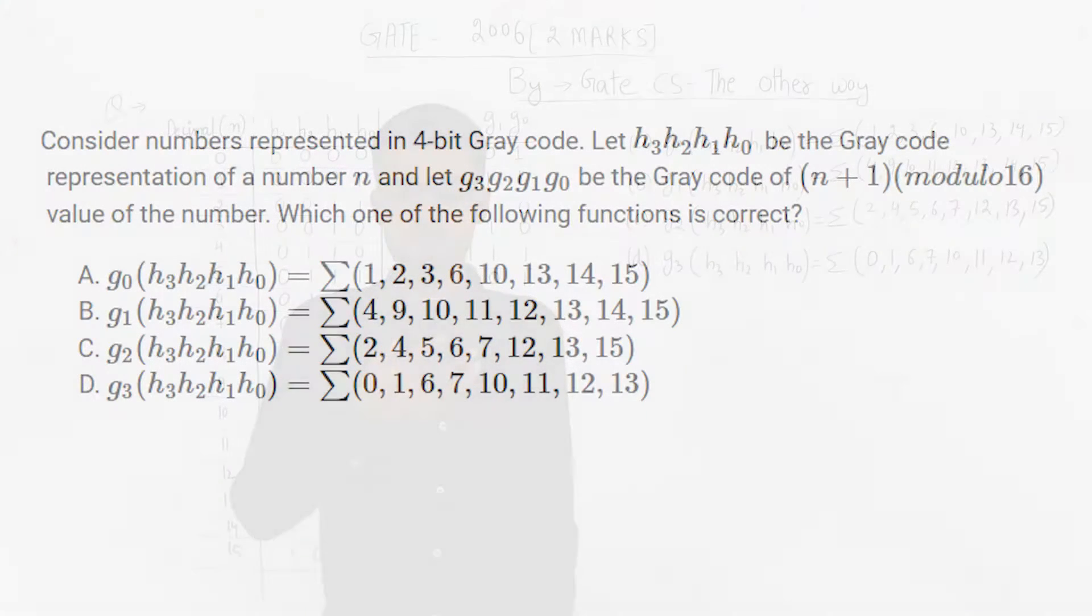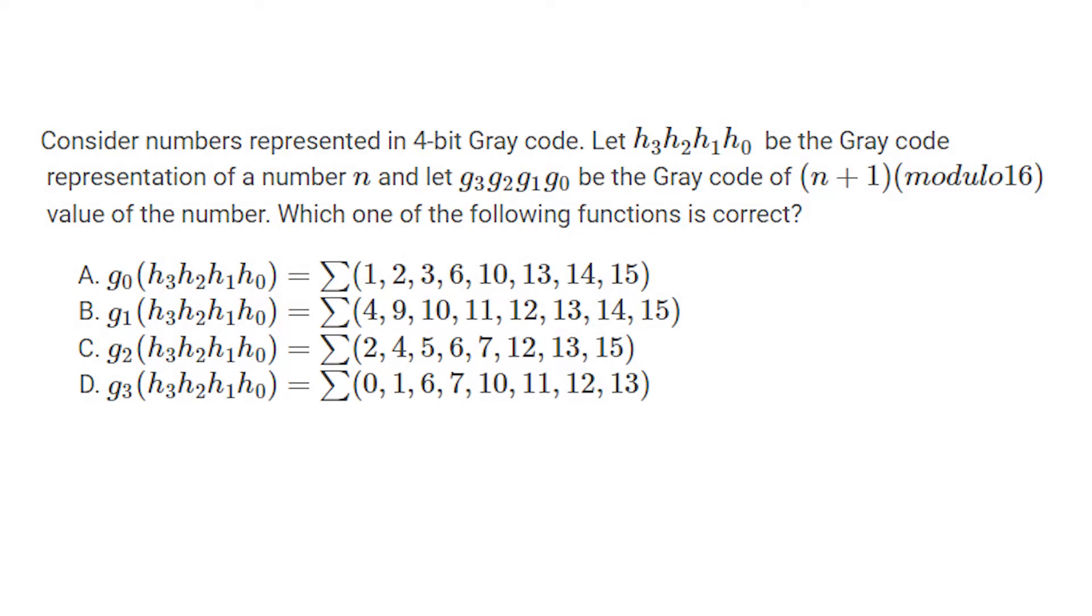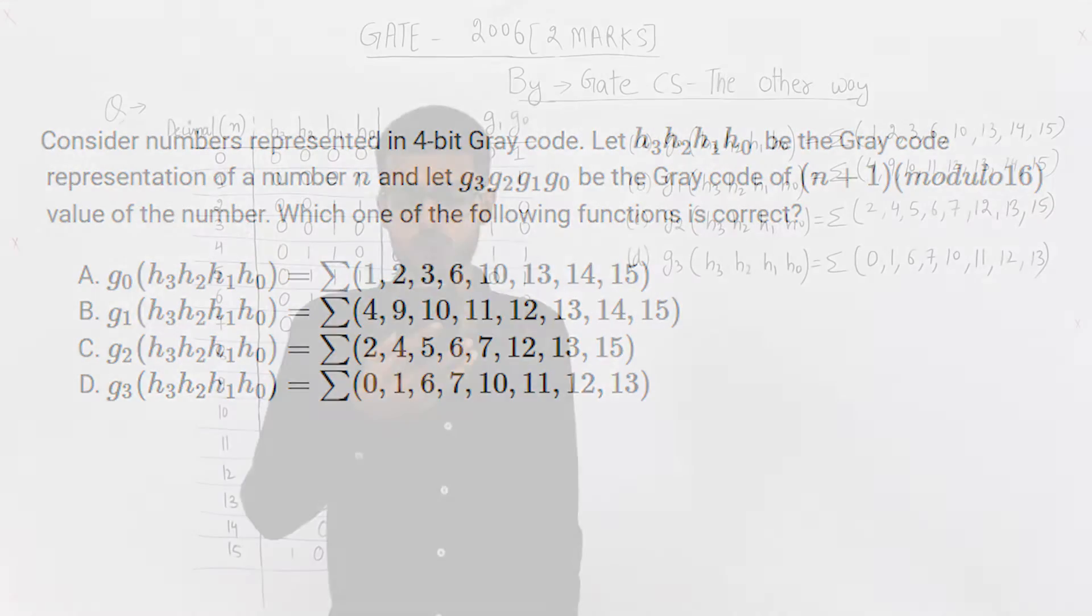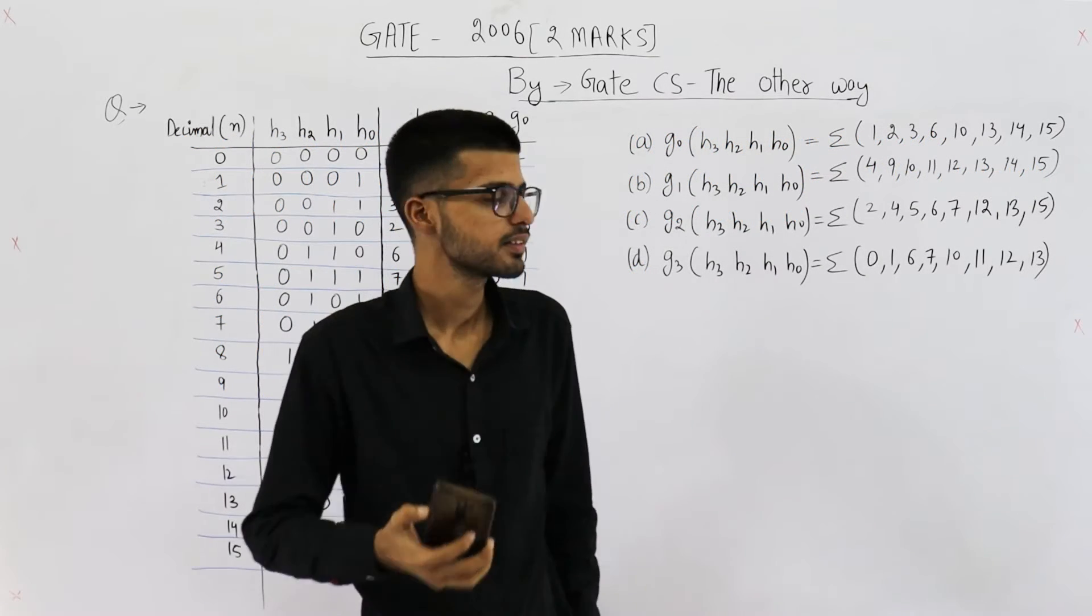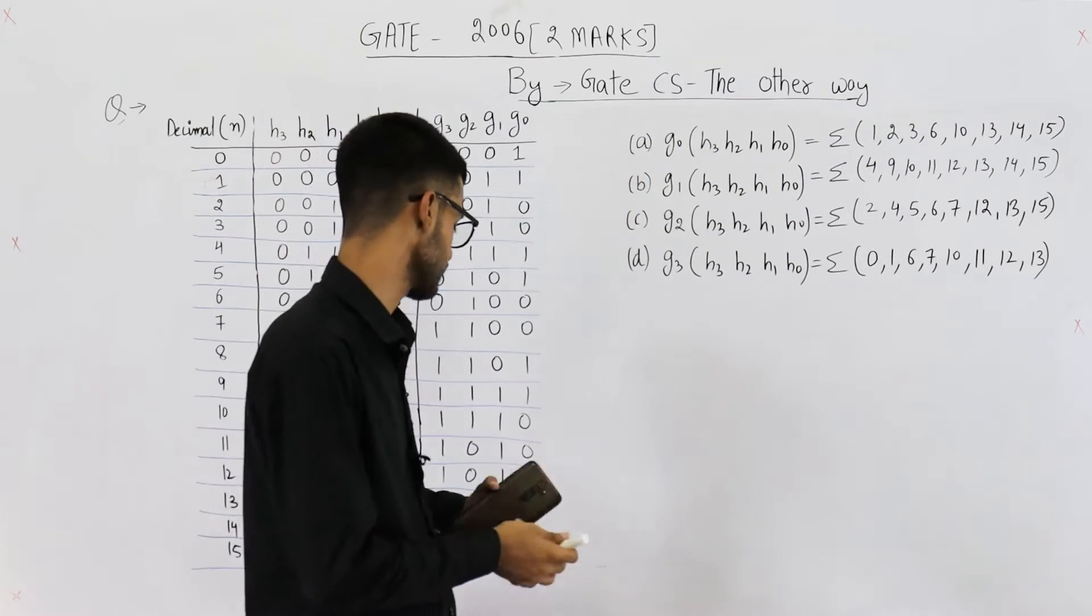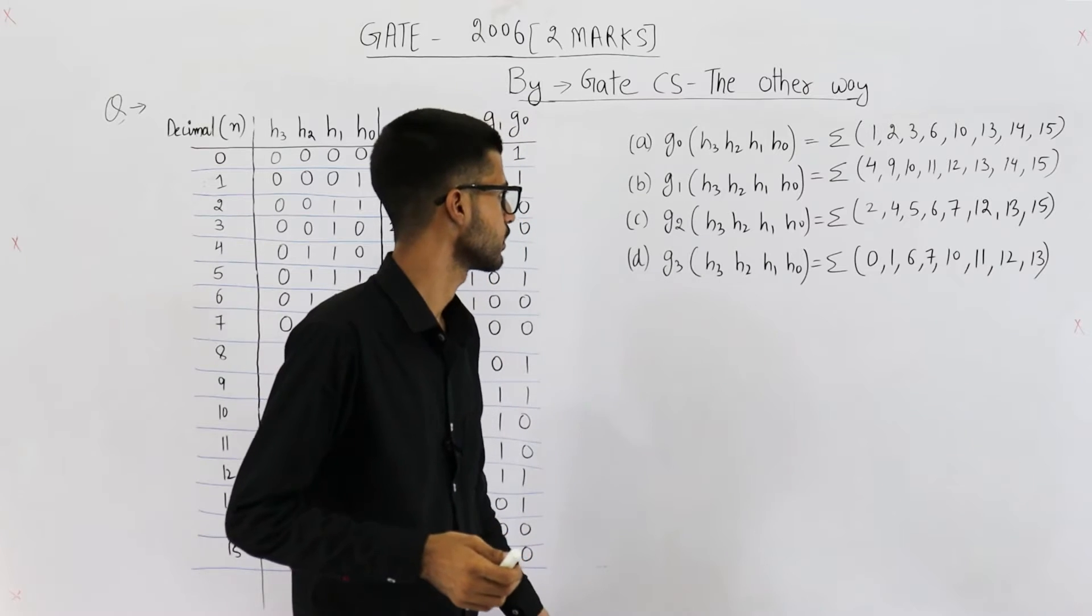Consider the numbers represented in 4-bit gray code. Let h3, h2, h1, h0 be the gray code representation of a number n. Let g3, g2, g1, g0 be the gray code representation of n plus 1 modulo 16 value of the number. Which one of the following functions is correct? You can see they have given you 4 functions as the 4 options to this question.